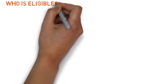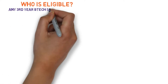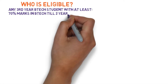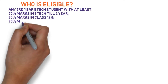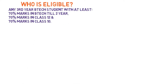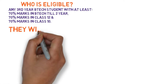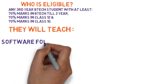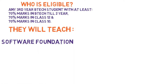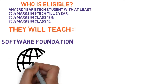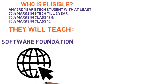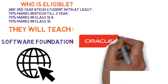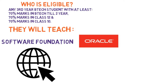Who is eligible for this program? Any 3rd year B.Tech student from any branch with at least 70% marks in B.Tech till 2nd year, 70% marks in Class 12, and 70% marks in Class 10 can apply for this program, only if their college has enrolled in this program. This program will teach you Engineering Foundation, Web, RDBMS, Programming in Java, Programming in C#, and Cloud.